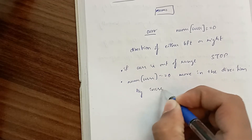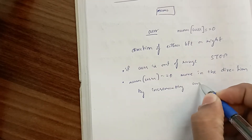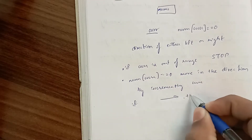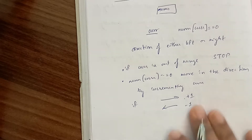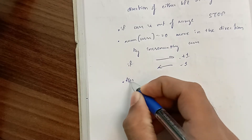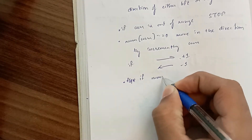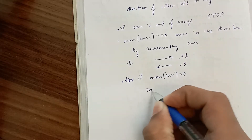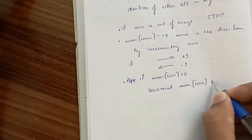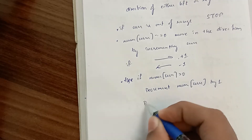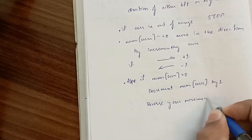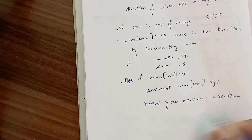We move by incrementing current — if moving right, increment by 1; if moving left, decrement by 1. Otherwise, if nums[current] is greater than 0, decrement nums[current] by 1 and reverse your movement direction.